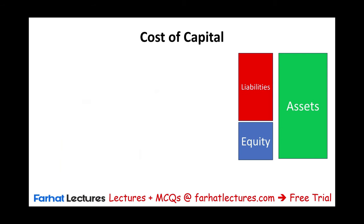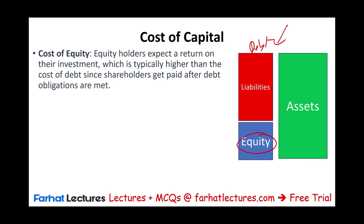When we finance ourselves we can do it through equity or debt. The cost of equity is higher than the cost of debt because equity holders are the last to be paid — they take the most risk. As a result, they want a higher return. Shareholders are taking more risk, so typically the cost of equity is higher than the cost of debt.